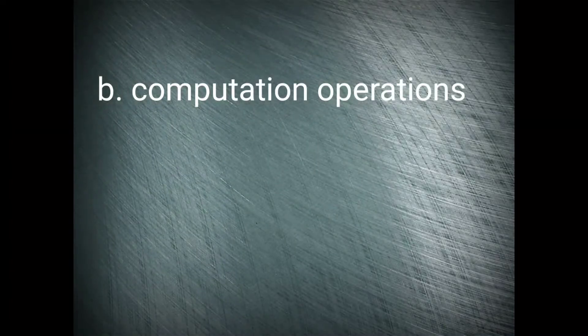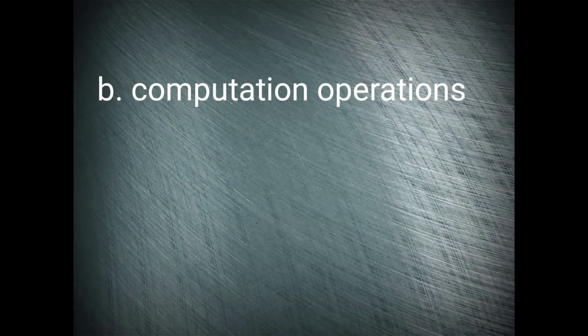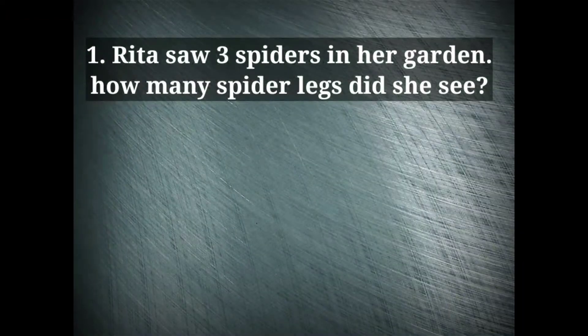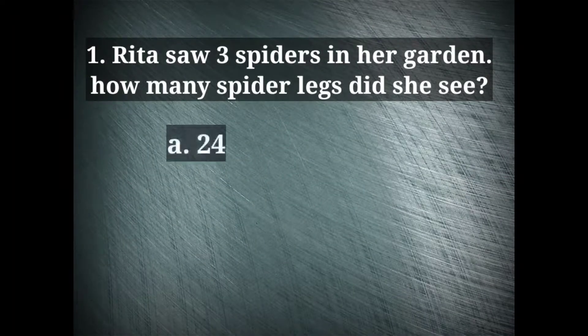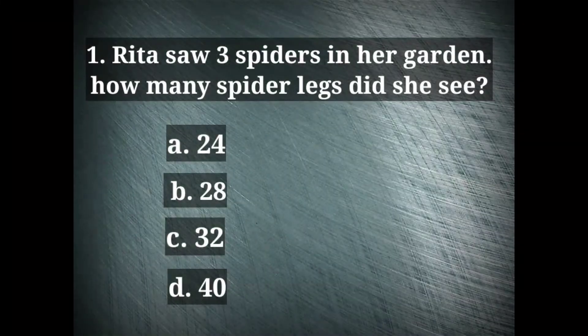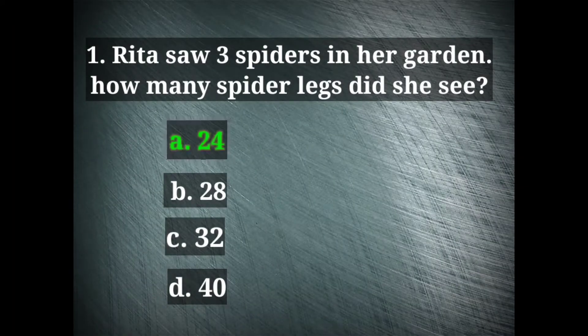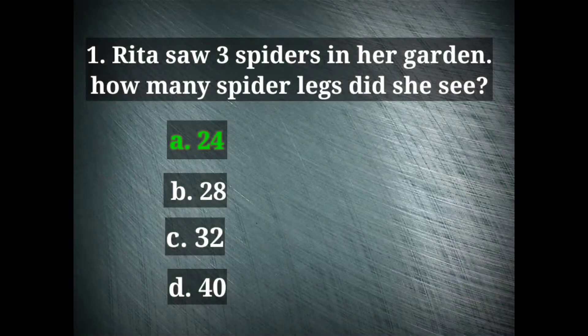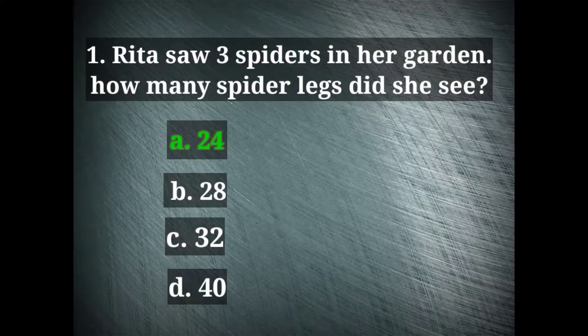Now the next topic is computation operations. It is the process of calculating or determining something by logical or mathematical methods. Let's see the sample questions now. Question number one, Rita saw three spiders in her garden. So, how many spider legs did she see? The options are 24, 28, 32 and 40. The right option here is option A, 24. Each spider has 8 legs. Three spider has 3 times 8 legs that is 24. 8 plus 8 plus 8.